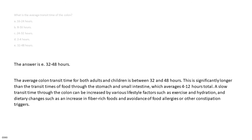The answer is e. 32 to 48 hours. The average colon transit time for both adults and children is between 32 and 48 hours. This is significantly longer than the transit times of food through the stomach and small intestine, which averages 4 to 12 hours total. A slow transit time through the colon can be increased by lifestyle factors such as exercise and hydration, and dietary changes such as an increase in fiber-rich foods and avoidance of food allergies or other constipation triggers.